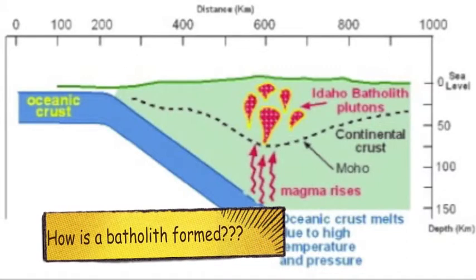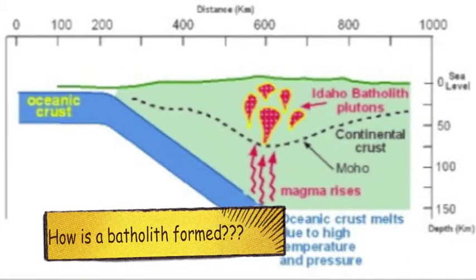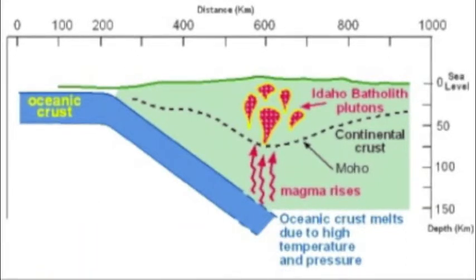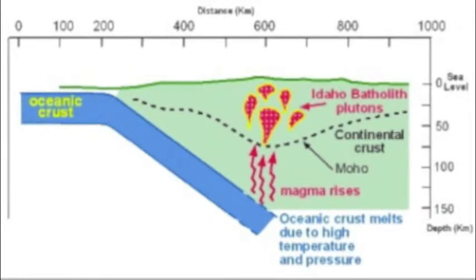The Idaho Batholith is formed of Cretaceous granite and granodiorite rocks. It is comprised of two sections: the Atlanta Lobe and the Bitter Root Lobe.